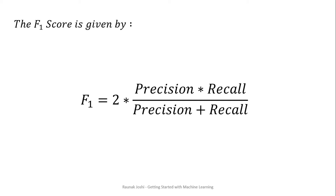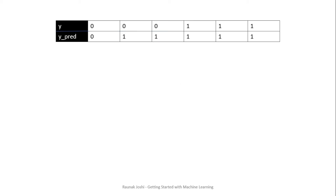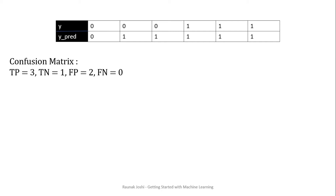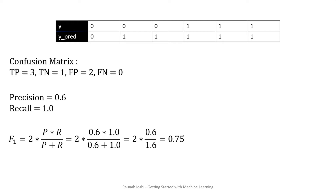Let us learn with an example. Assuming I have my y labels and y predicted labels, I find the confusion matrix first. I get true positives as 3, true negatives as 1, false positives as 2, and false negatives as 0. Then we calculate precision and recall. Precision equals true positives divided by true positives plus false positives. Recall, also known as sensitivity, equals true positives divided by true positives plus false negatives. We then combine them to get the F1 score — we get 0.6 divided by 1.6, which gives 0.75.